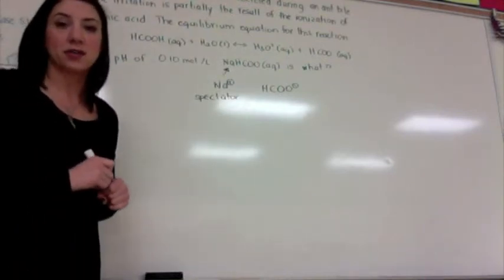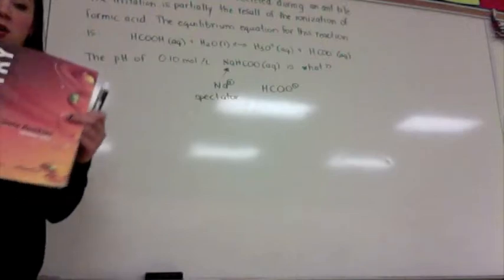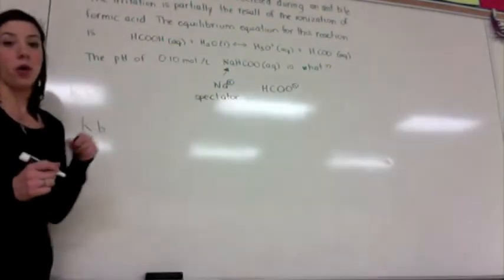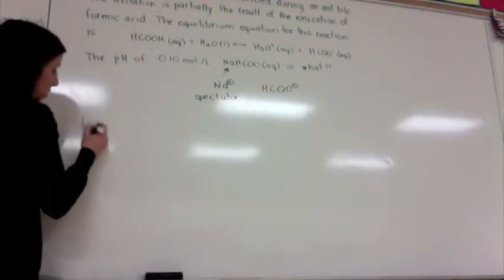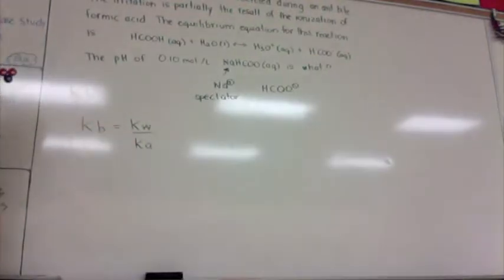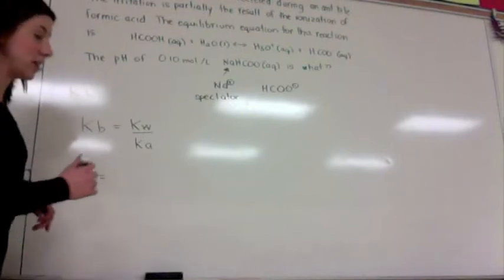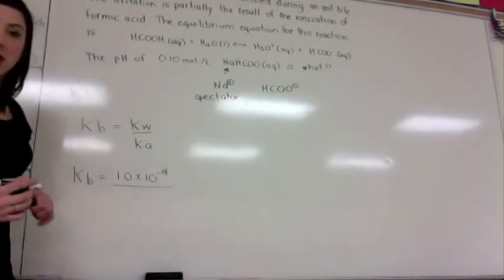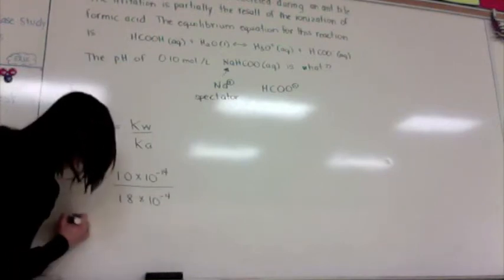We are never given Kb values directly — we are always given Ka values, which we can find in the chemistry data booklet on pages 8 and 9. We know the Ka value of HCOOH, or methanoic/formic acid, is 1.8 × 10⁻⁴. What we can do is use the equation Kb = Kw ÷ Ka to calculate the Kb value. Our Kw, the equilibrium constant for water, is always 1.0 × 10⁻¹⁴. We plug in the Ka of 1.8 × 10⁻⁴ to calculate our Kb value.